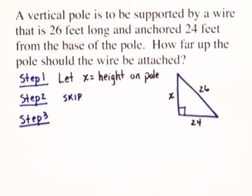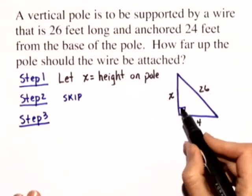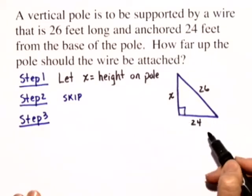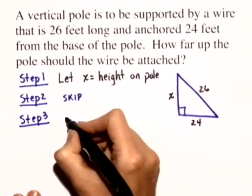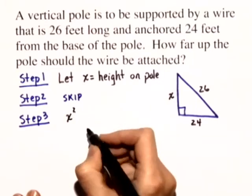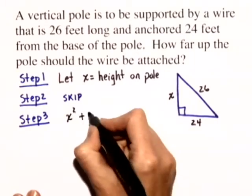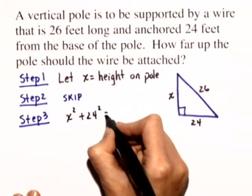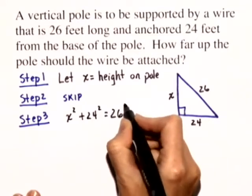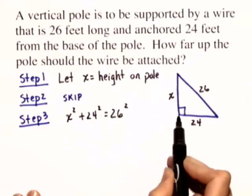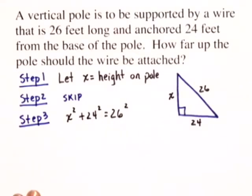In step 3 we write an equation relating the unknown quantities. It's a right triangle so we'll use the Pythagorean theorem. In this case we have X squared plus 24 squared is equal to 26 squared. Remember the sum of the squares of the legs is equal to the square of the hypotenuse.